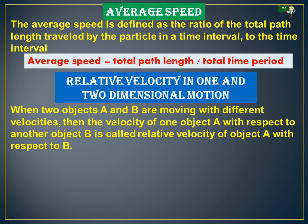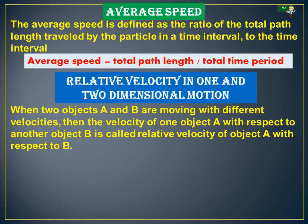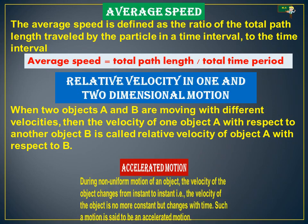Relative velocity in one and two-dimensional motions. When two objects A and B are moving with different velocities, the velocity of object A with respect to object B is called the relative velocity of A with respect to B. For example, in a 100-meter or 200-meter running race, the velocity of one person influences the other person running ahead or behind — this influence is called relative velocity.